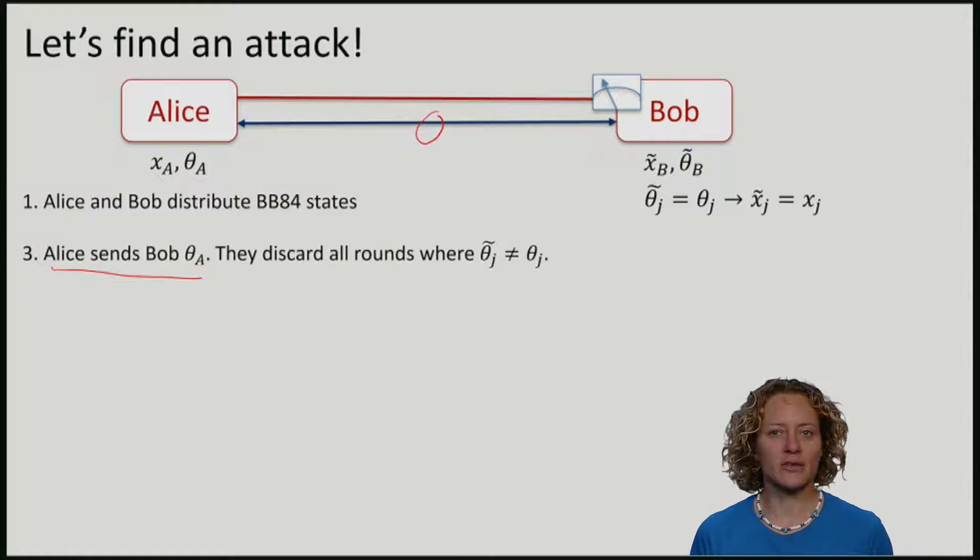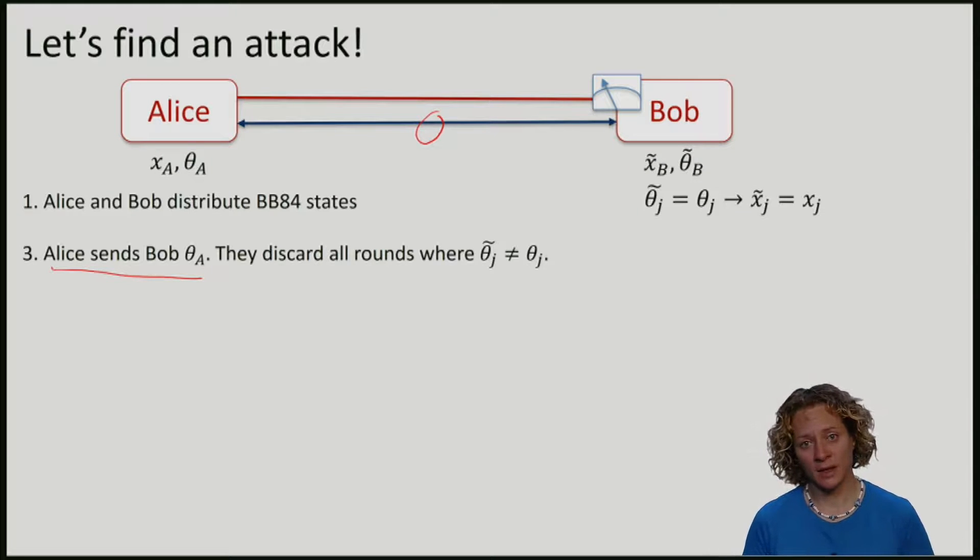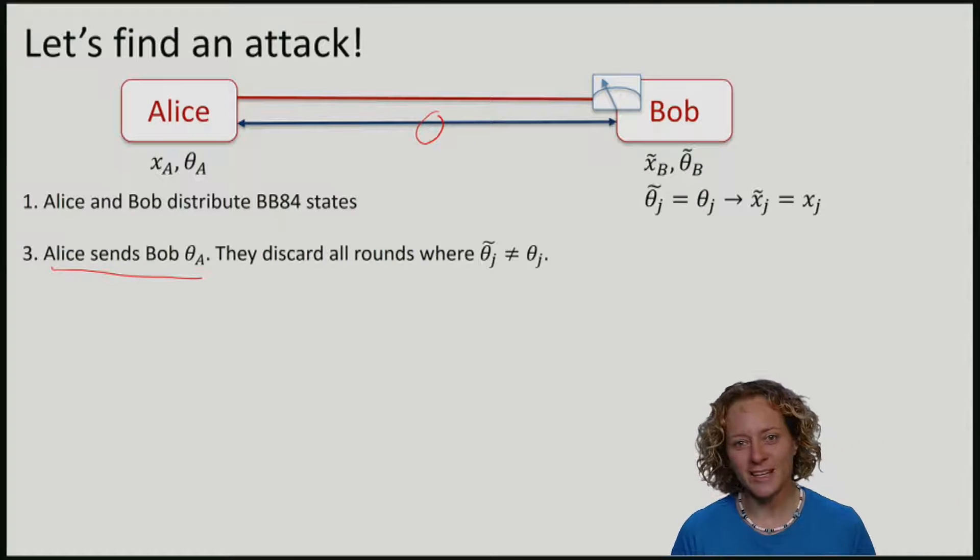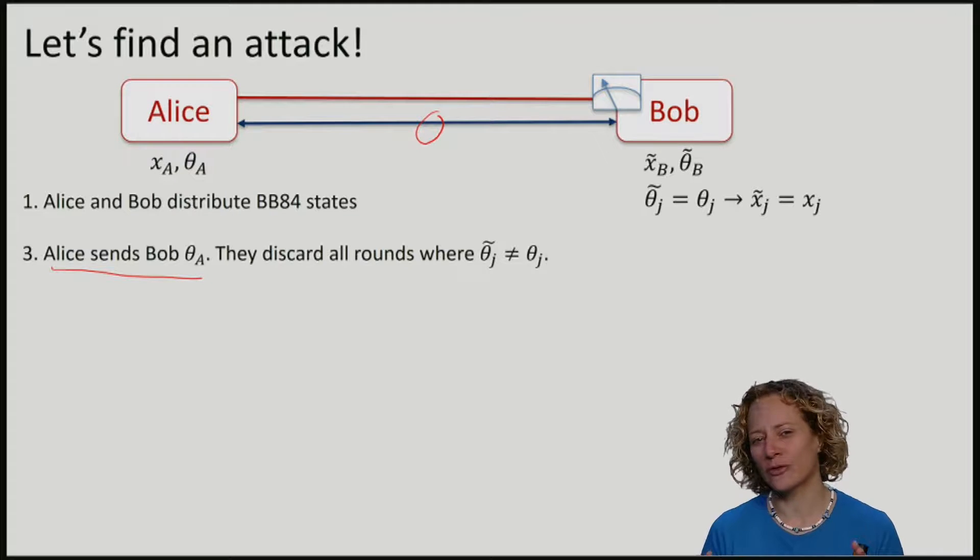Remember that if they communicate over the classical channel, Eve can read all the messages. Bob knows that the message came from Alice, but Eve can read it. This means that Eve could store in her perfect and all-powerful system, namely a huge quantum memory, she could store all the qubits that Alice has sent to Bob.